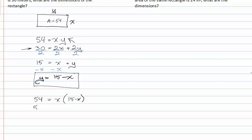So now I have fifty four is equal to fifteen x minus x squared. Setting everything equal to zero and factoring, I get add x squared, subtract fifteen x from both sides.